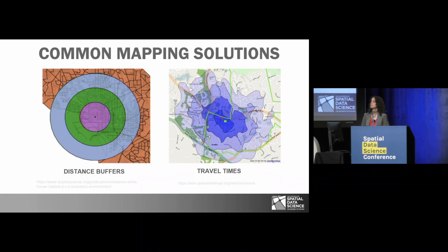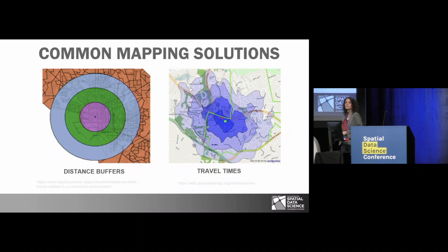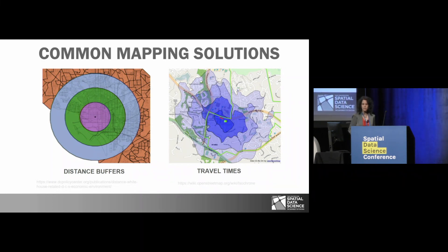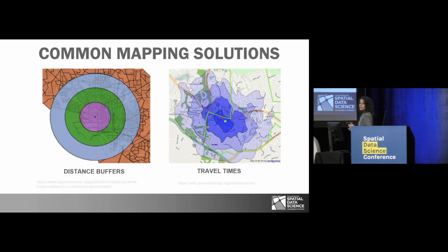If you just look at travel times, it ignores the underlying population that is near your location of interest. And if you have a resource with limited supply, like physicians, human services, or employment, then this is relevant because you're ignoring how many people are hitting this resource and contributing to congestion, saturation, or overcrowding of that resource. In addition, from a client's perspective, these fixed boundaries are artificial because you're traversing them.